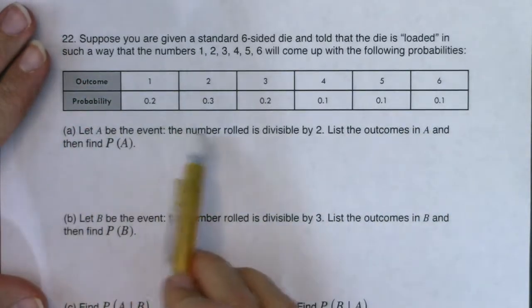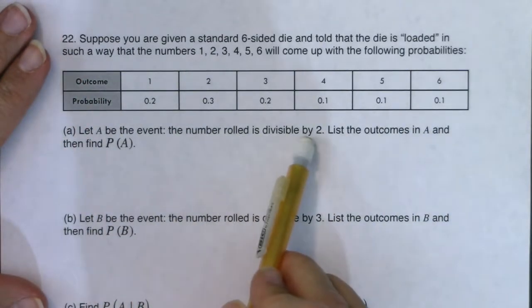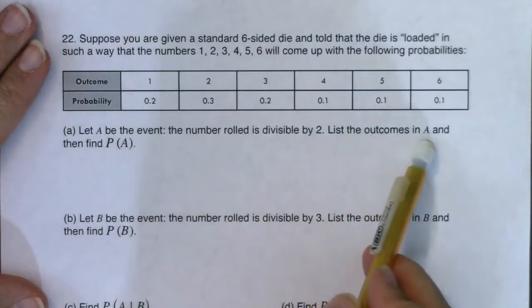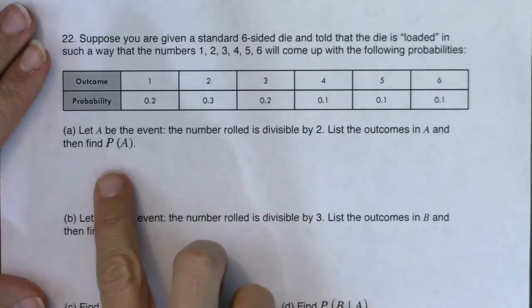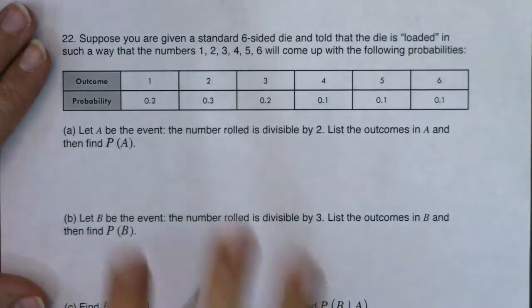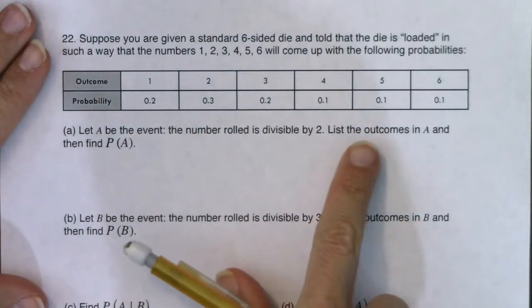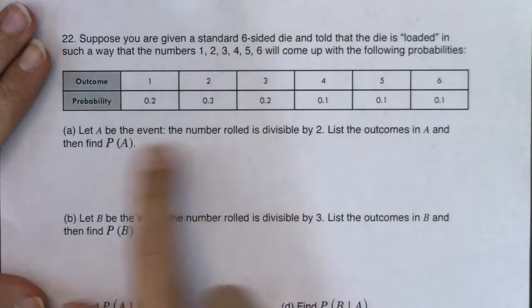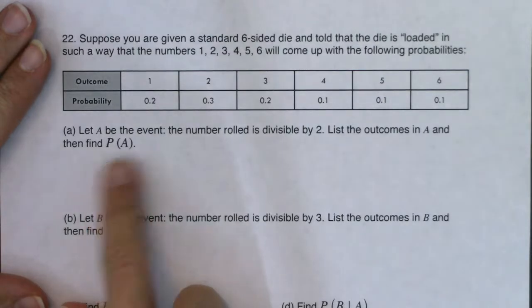So let A be the event that the number rolled is divisible by two, list the outcomes in A, and then find the probability. So part A actually has two parts to it, right? I need to list the outcomes in event A, and then I need to find the probability of A.